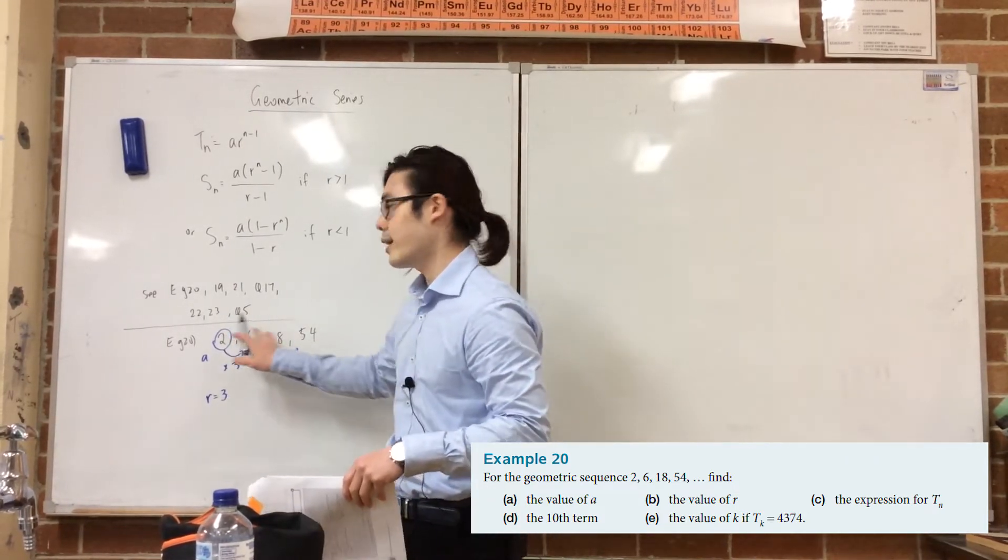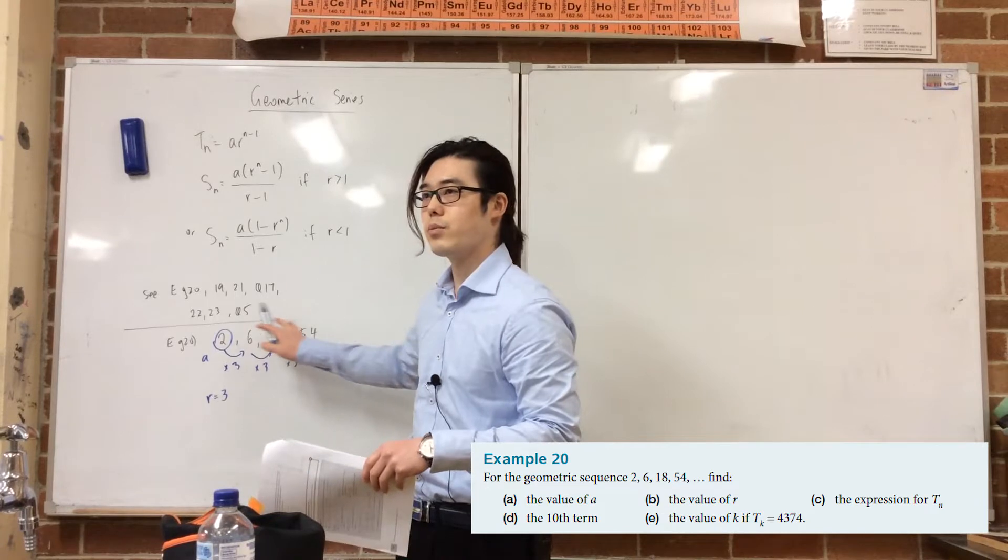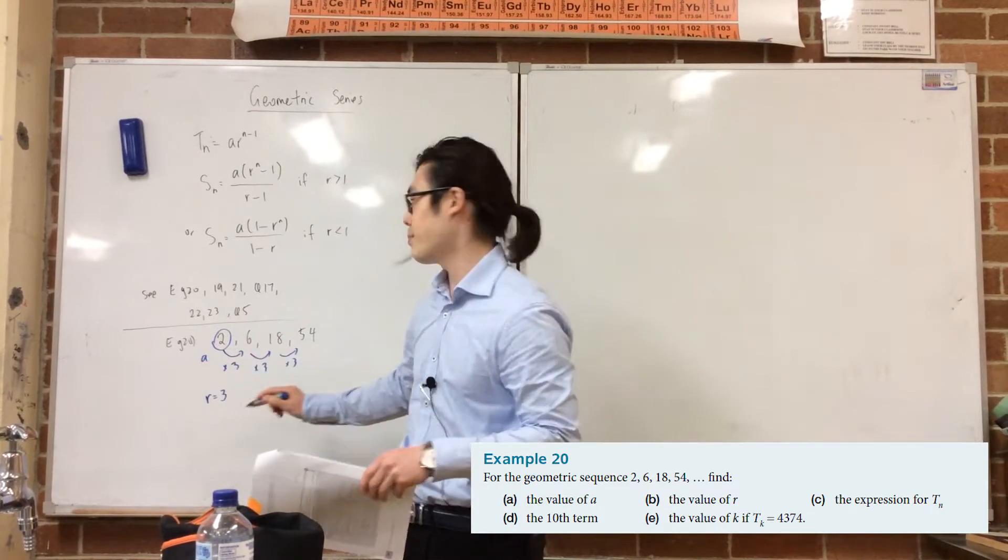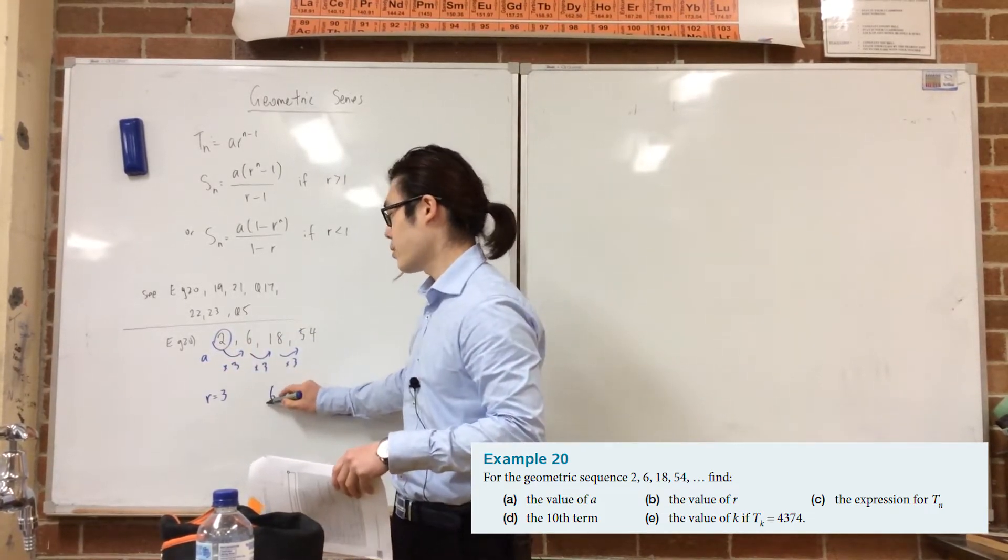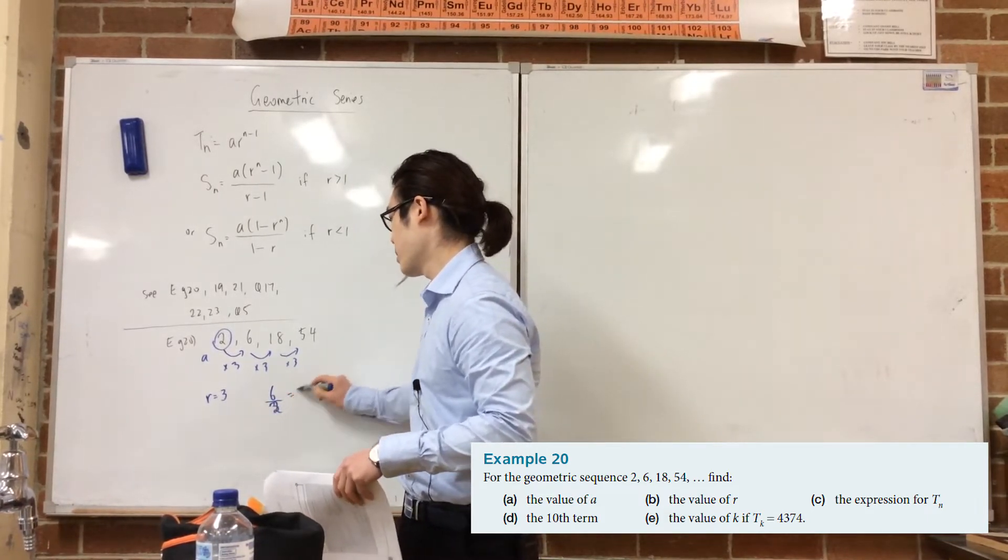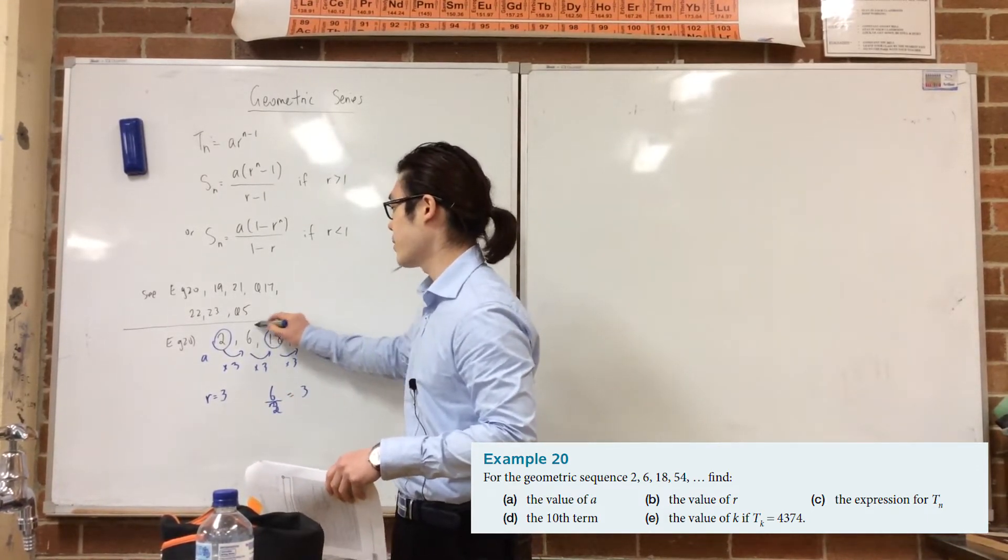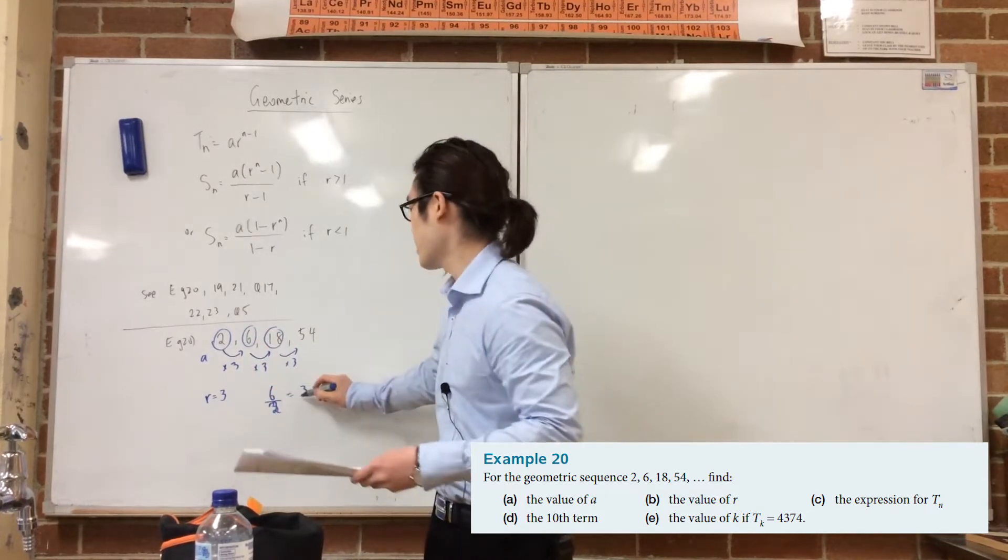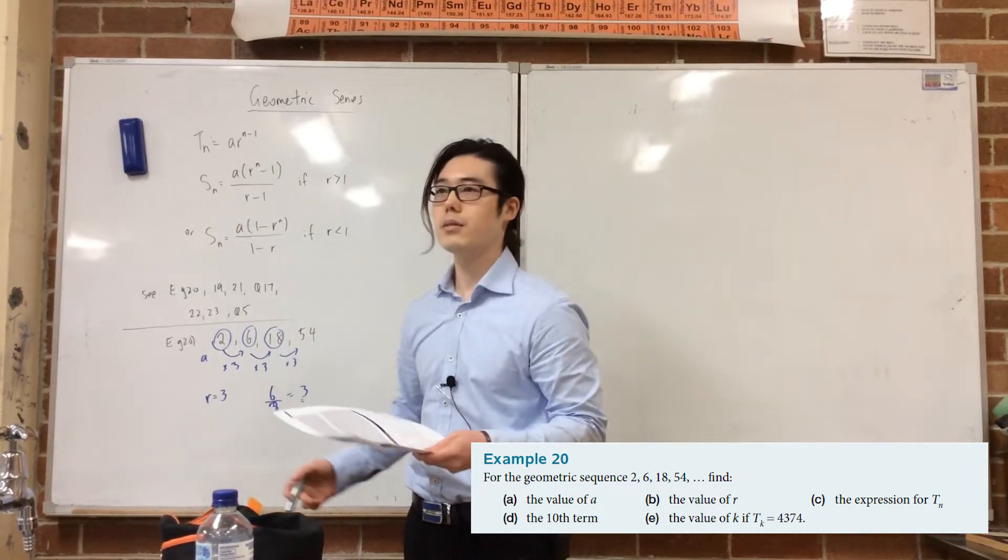So for instance, like here, let's say this was some really crazy number, you didn't know what it's going up by. It's always going to be the second term over the first term. Or you could do the third term divided by the second term. You're always going to get the same ratio.